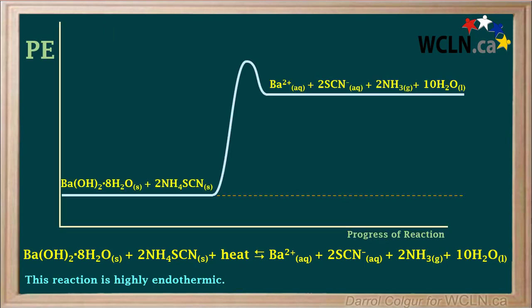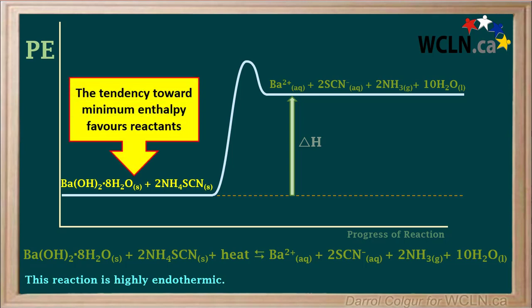The potential energy diagram for this endothermic reaction would look something like this, with a large positive value for the enthalpy change delta H. The reactants have much less potential energy than the products, so the tendency toward minimum enthalpy would favor the reactants.